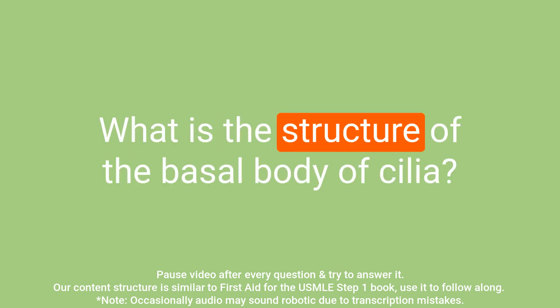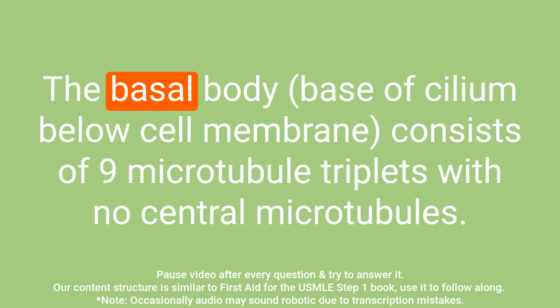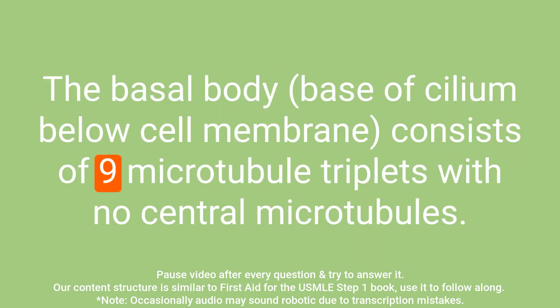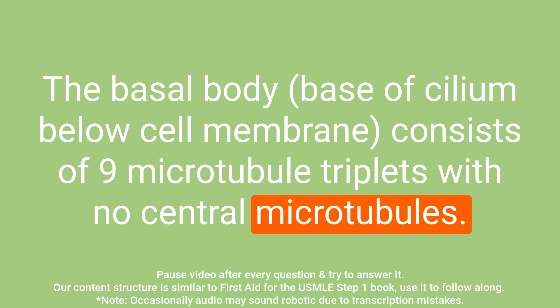Question: What is the structure of the basal body of cilia? Answer: The basal body consists of nine microtubule triplets with no central microtubules.